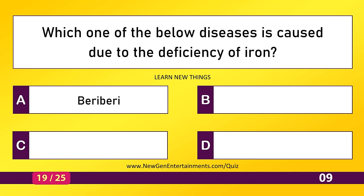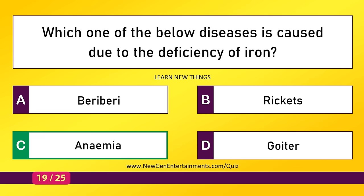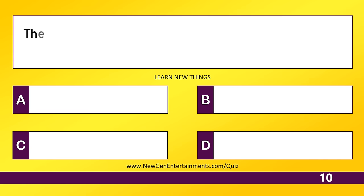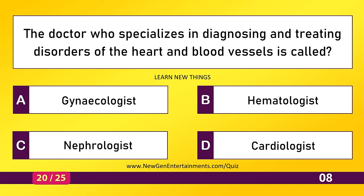Which one of the below diseases is caused due to the deficiency of iron? Anemia. The doctor who specializes in diagnosing and treating disorders of the heart and blood vessels is called a cardiologist.